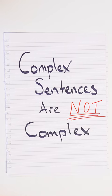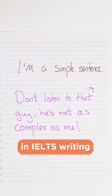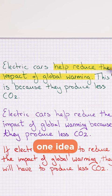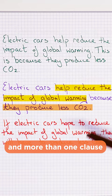Complex sentences are not complex. There are two types of sentences in IELTS writing: a simple sentence and a complex sentence. Here are two simple sentences — put them together and you make a complex sentence. A simple sentence simply has one idea or one clause, while a complex sentence has more than one idea and more than one clause.